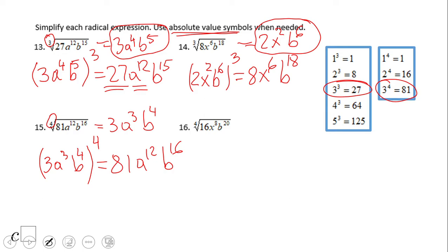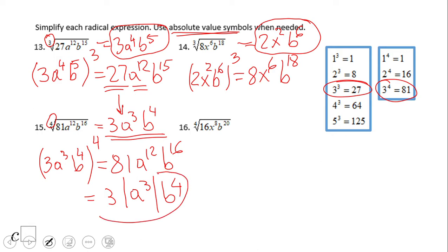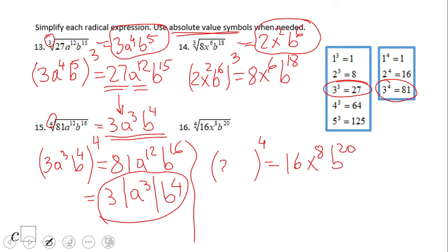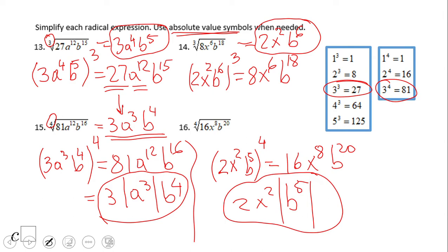Now look at this statement about absolute value. Ask yourself: can any part of the expression be negative? Since b⁴ is always a positive quantity, we don't need to worry there. For number 16, if you have 2x² times the absolute value of b⁵, then you did a wonderful job — that term can be negative, so you need to use absolute value.